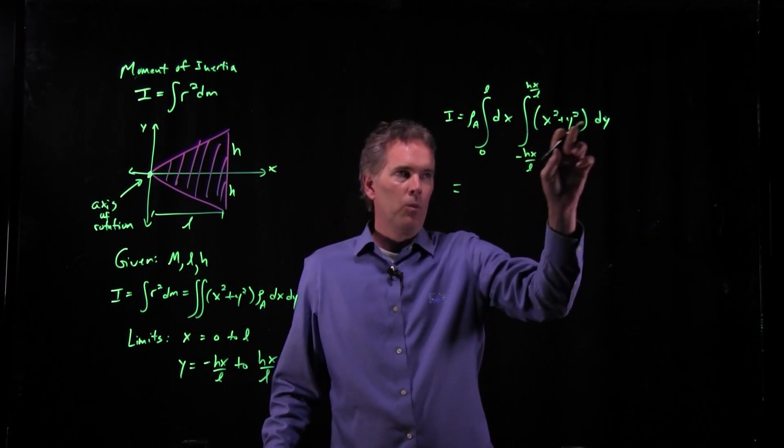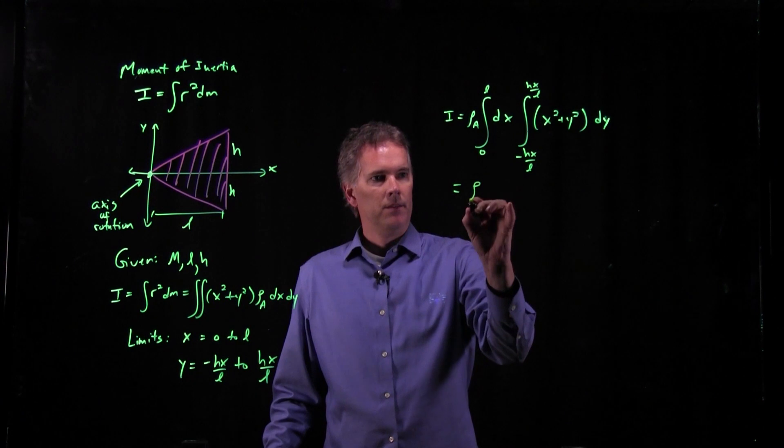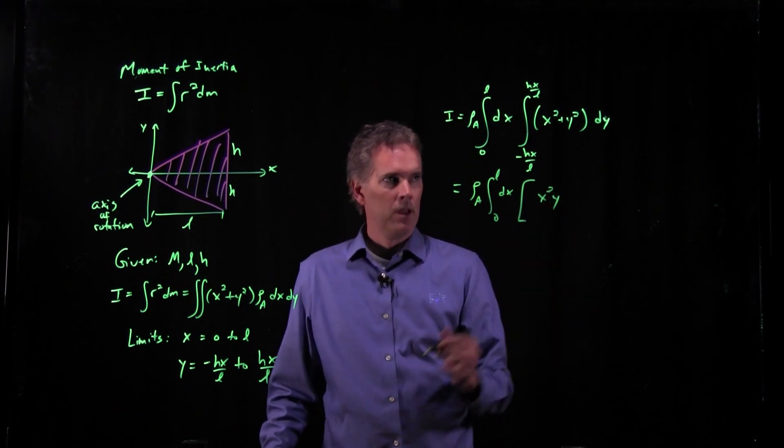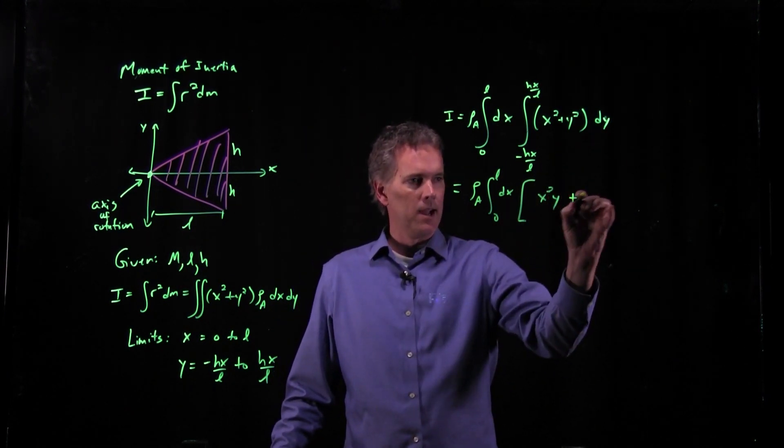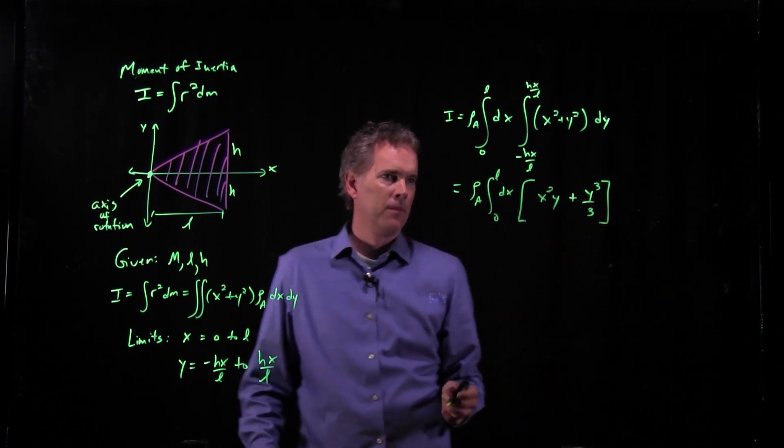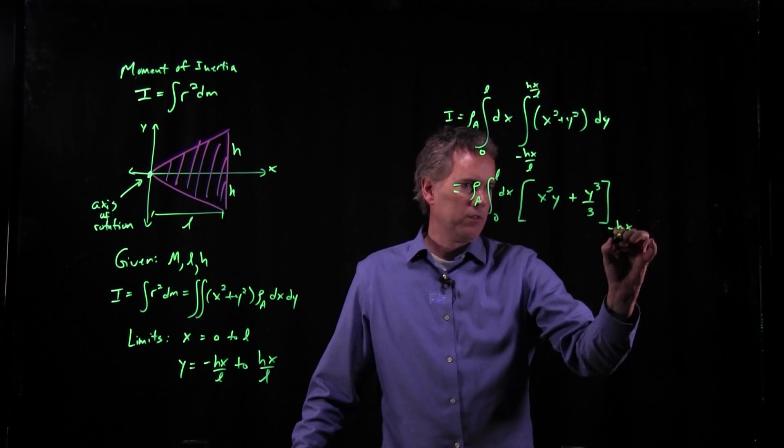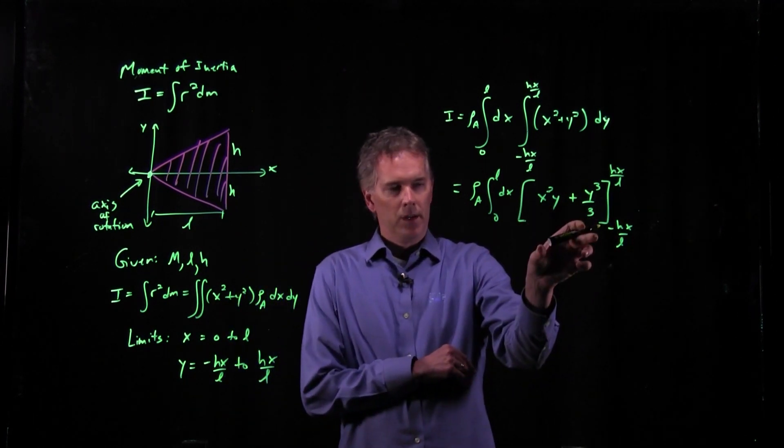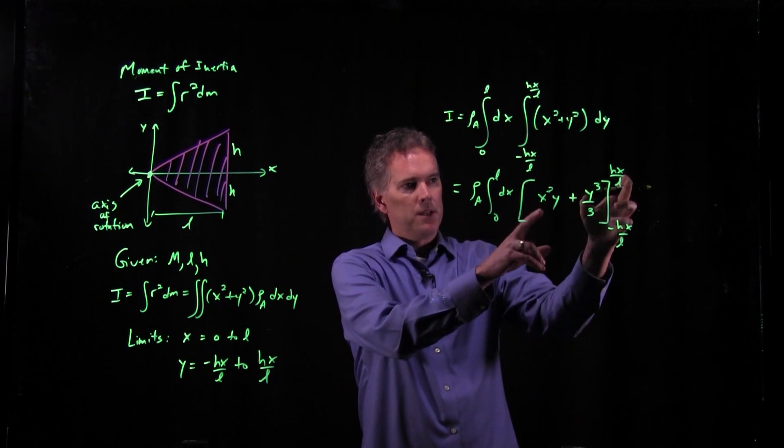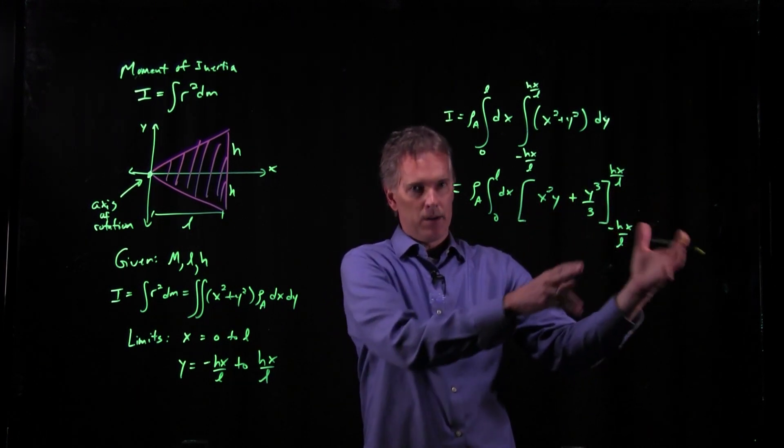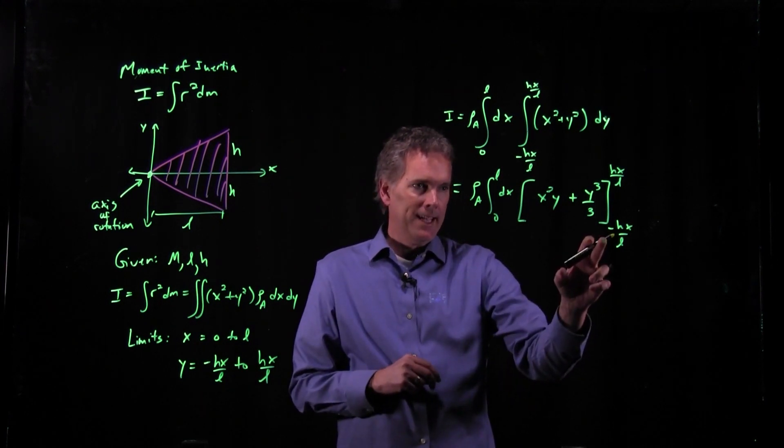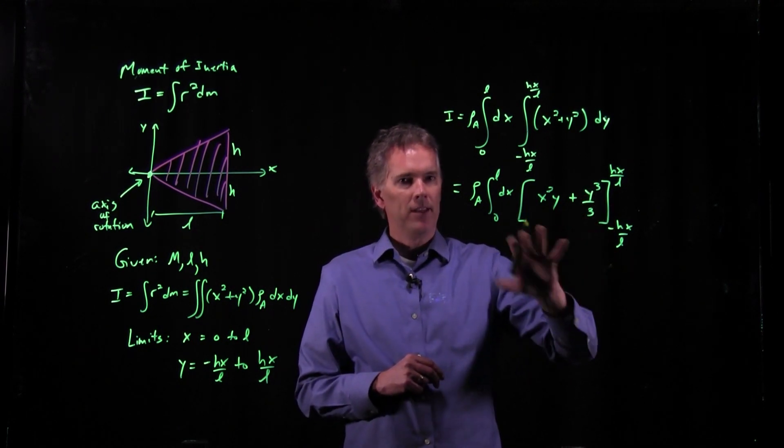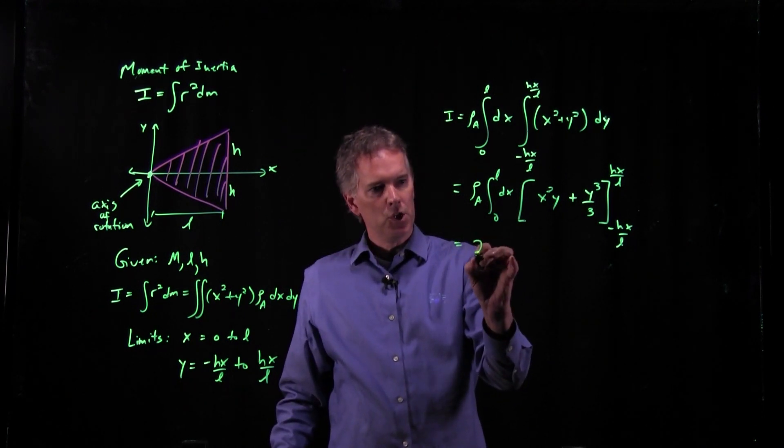Integral of x² with respect to y just adds a y to it. So this becomes x² times y. Integral of y² with respect to y becomes y³ over 3. And then we have to evaluate this negative hx over L to positive hx over L. And remember when you do these integrals and now you're going to evaluate it, you're going to put the top one in and then you're going to subtract the bottom one. But putting a bottom one into something that has the power of 1 or the power cubed means we're going to keep that negative sign. And so that's just going to double the value of the integrand.